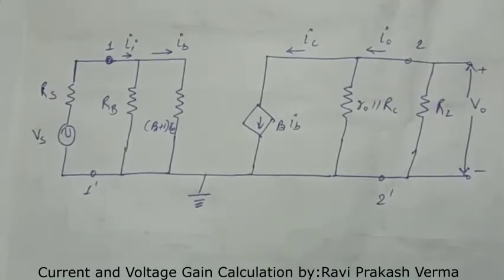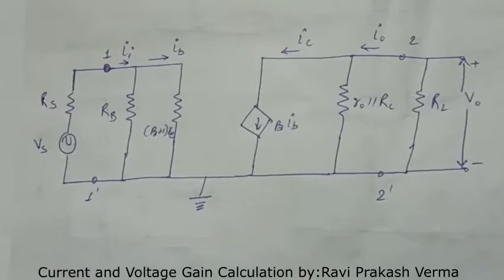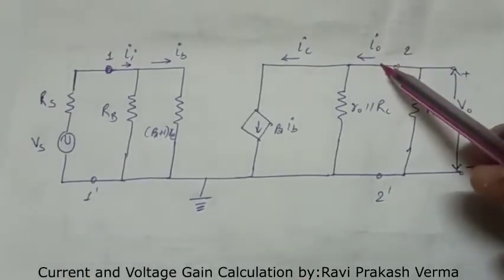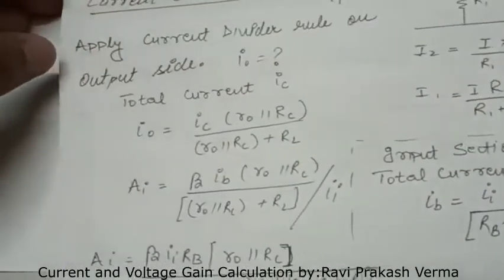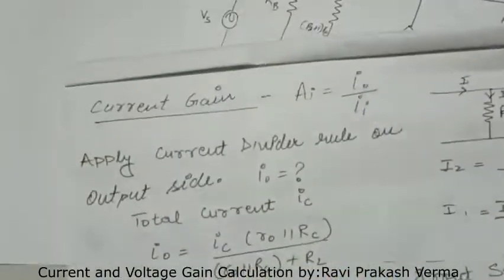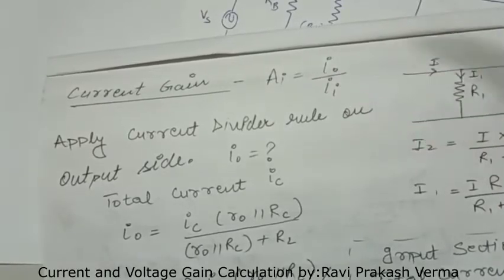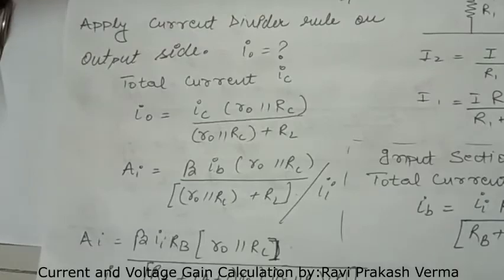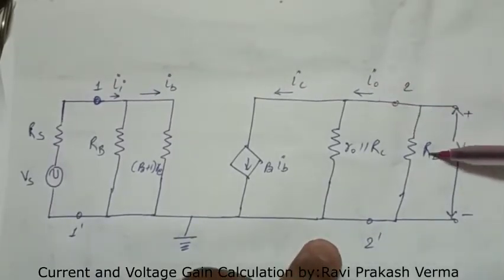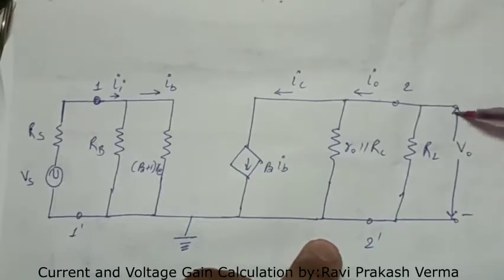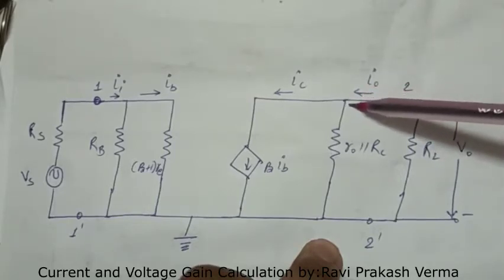We have to calculate the current gain for the given circuit. Current gain means output current upon input current. In this circuit, the output current is I naught and the input current is II. So we have to find the current gain, which is I naught upon II. First, find the value of I naught. From the circuit, I naught is the current flowing through the load resistance RL, because there is no other circuit beyond RL.